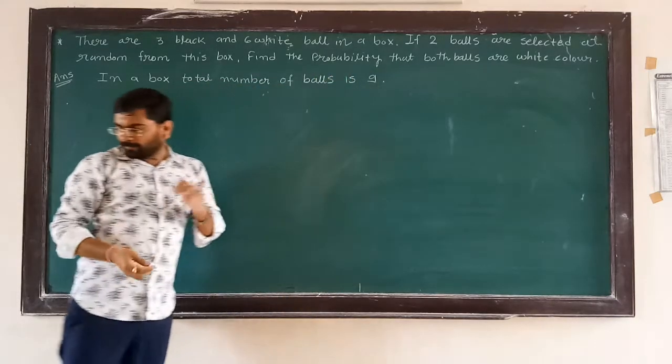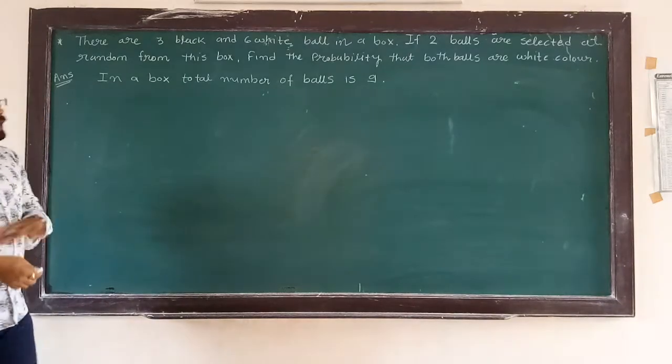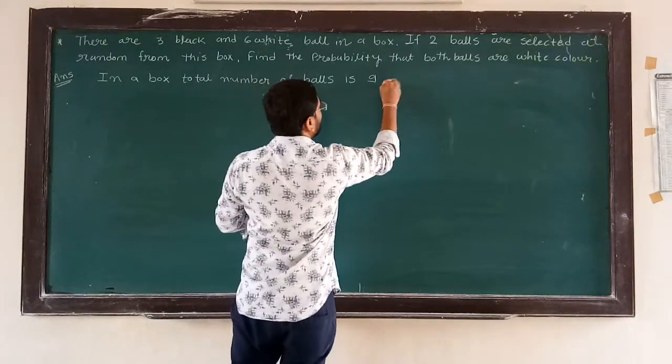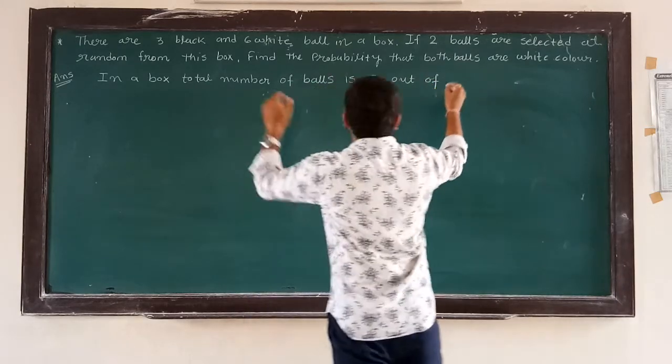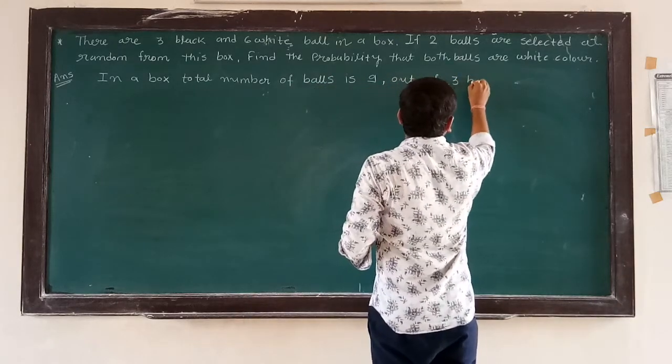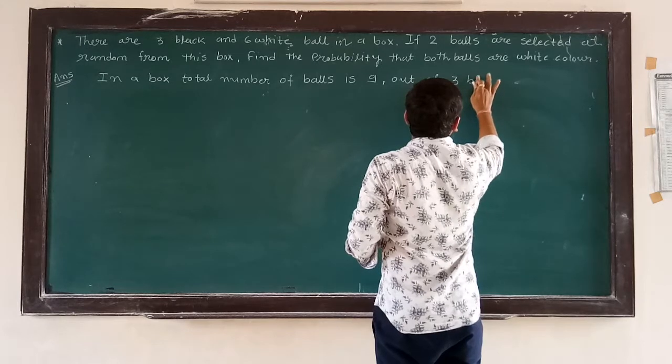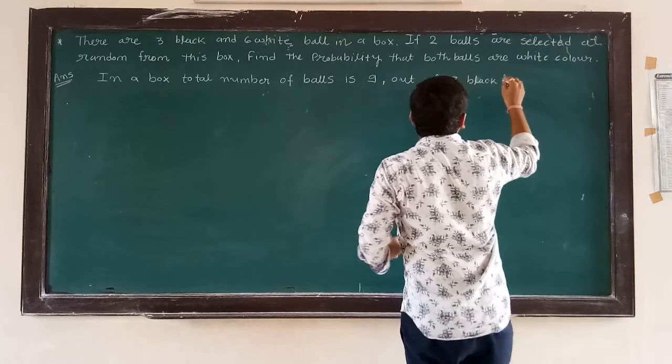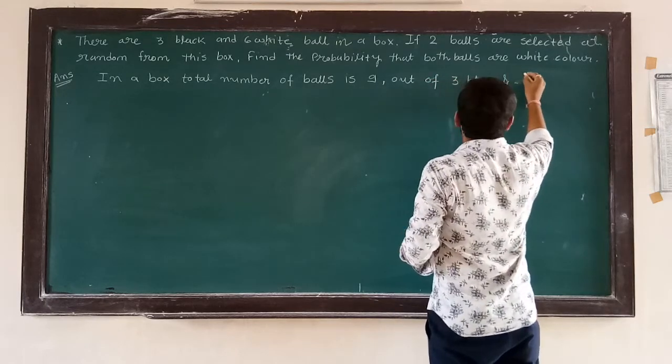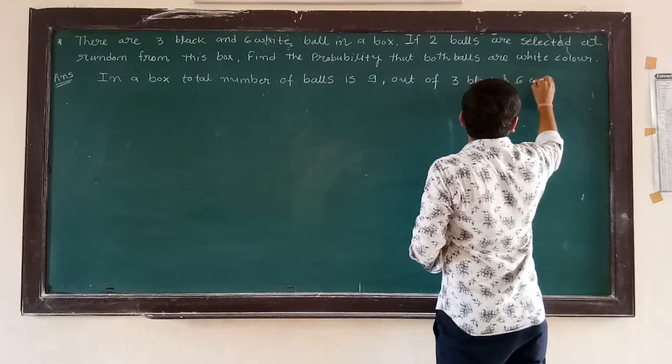Out of which 3 black and 6 white. So first of all, we are finding our total means N.